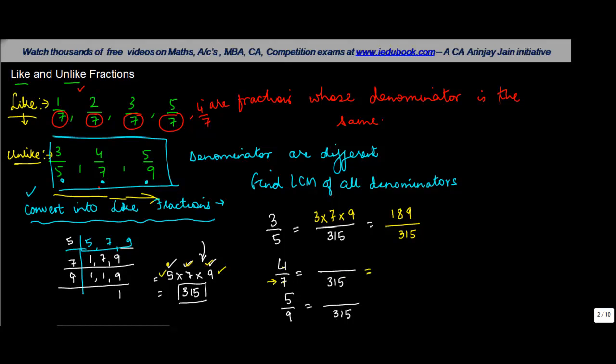So we also need to multiply 4 by the same number. So we multiply 4 by 5 and 9, we get 180 by 315. You want to do this yourself? So you've multiplied 9 by what? You multiply 9 by 5 and 7.